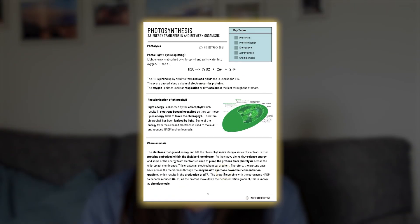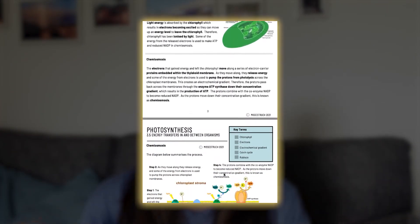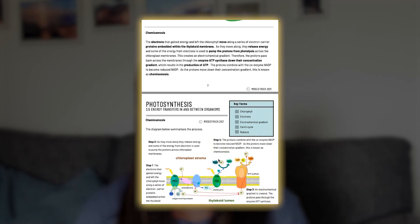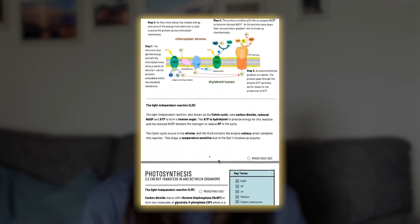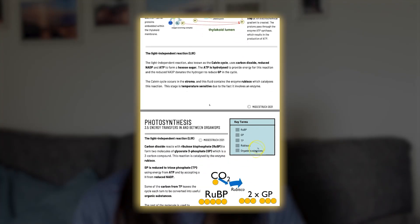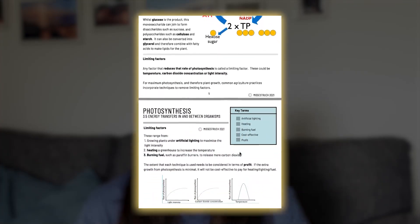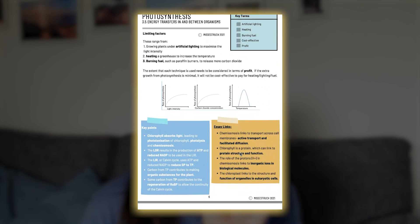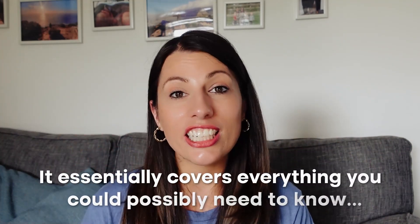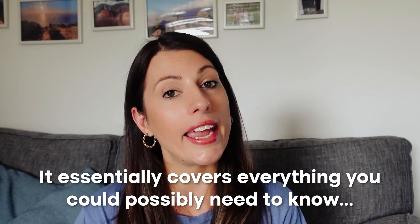I'll link those in the description so you can check them out. To prepare for the entire two years of your A-levels — or one year if you're just doing AS — I would highly recommend my A-level Biology Notes. These are my number one bestsellers with so many positive reviews. Unlike a textbook, my notes have lots of images to make content more accessible and understandable, key terms highlighted on every page, key marking points, topic summaries, essay links for AQA, and examiner's hints and tips. They essentially cover everything you could possibly need to know for A-level biology theory.